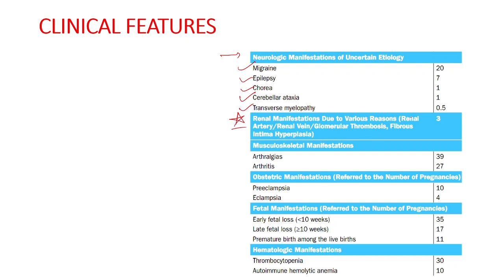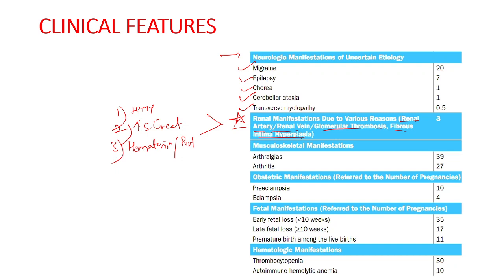Other neurological manifestations include migraine, epilepsy, chorea, cerebellar ataxia, and transverse myelopathy. Renal manifestations can be due to renal artery or renal vein thrombosis, glomerular thrombosis, or fibrous intimal hyperplasia. Patients typically present with hypertension, mildly elevated serum creatinine, hematuria, or proteinuria.